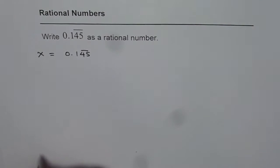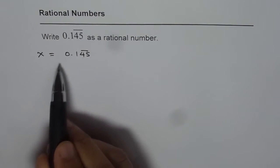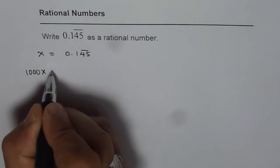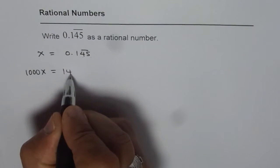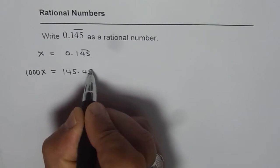Now, we need to multiply this by 1000 so that we get 145 on the left side. So we have 1000x equals 145.45 recurring.